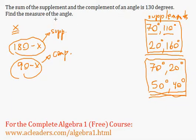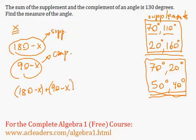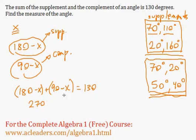We know that the sum of the supplement and the complement is 130 degrees, so this plus this equals 130. We set up: 180 minus x plus 90 minus x equals 130. We're adding these two expressions together.